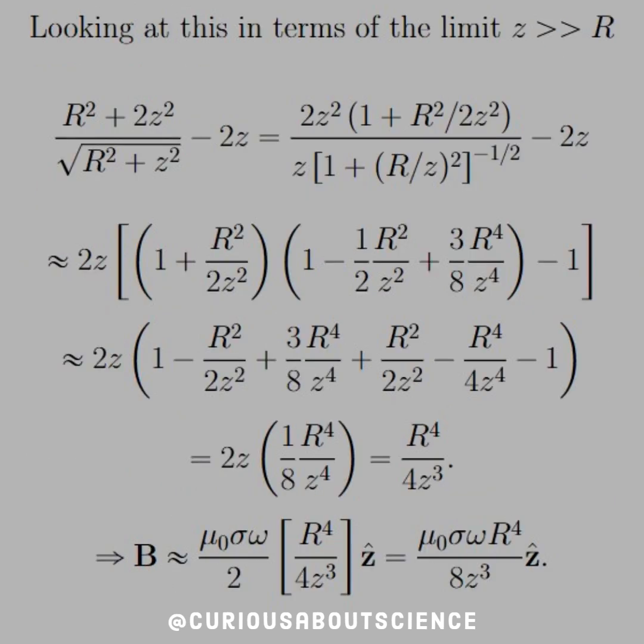All right. Now looking at this in terms of the limit for z greater than R, we get this nasty approximation, which I would suggest you look up in a table or something useful like that. And then we see that it boils down to big R to the 4 over 4z cubed.